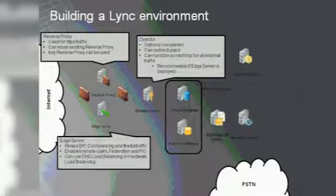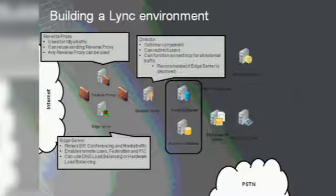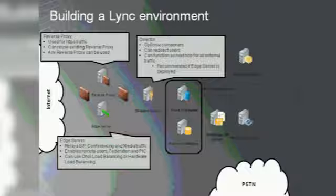Now let's talk about external connectivity. On the very left side you have the Internet, then an external firewall, the perimeter network, an internal firewall, and the director server. In the perimeter network we have the edge server and the reverse proxy. The edge server relays SIP traffic, conferencing traffic, and media traffic from the Internet to the internal network and vice versa. This enables remote users — a user working from outside the company, maybe on the customer side or from home — to use the edge server to connect to the Lync environment and get the full feature set, without realizing they're not on the internal network.